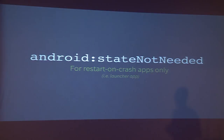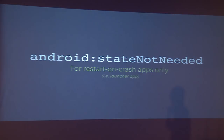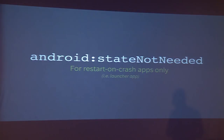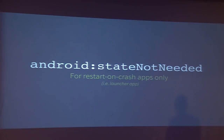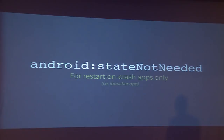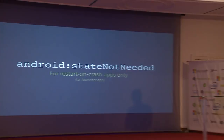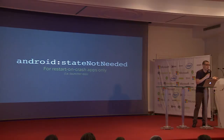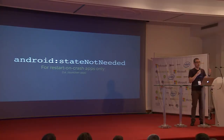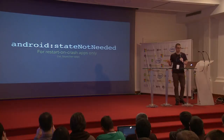There are rare cases where you don't want the state to be saved — normally only needed by developers creating launchers. There is a flag you can put in your Android manifest on the activity tag that tells the system it's not necessary to save the state. This is because when an activity crashes, the system checks the saved state; if it's not valid, the activity is wiped from the task. But if you declare that state is not needed, the state is always considered valid, so the activity can always be restarted — useful for launchers.